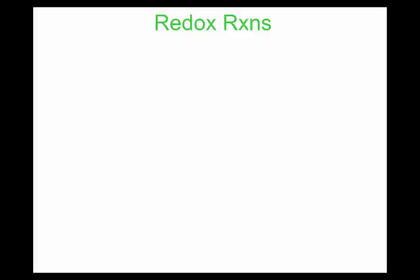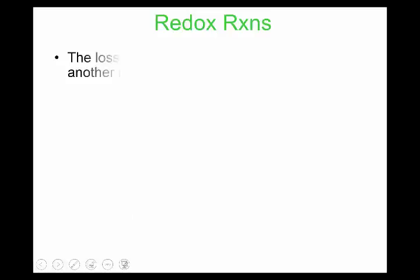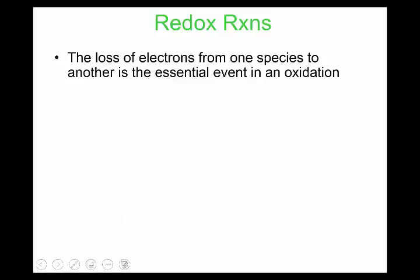In this tutorial we'll be covering redox reactions: how to assign oxidation states, and if given a redox reaction, how to determine which reactant is being reduced and which is being oxidized. This is our third type of reaction — there's precipitation, neutralization, and redox reactions. Most reactions fall into one of those three categories.